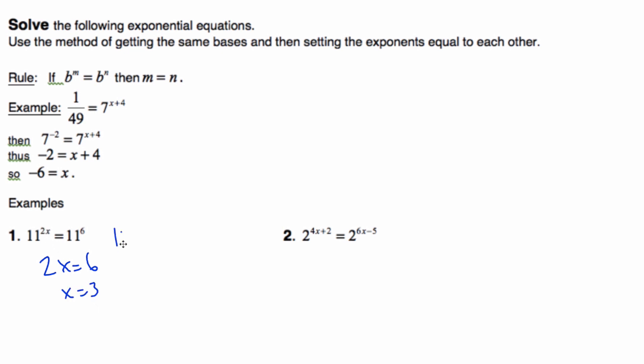And so if I check that, well, that's going to be 11 to the 2 times 3 is equal to 11 to the 6th. Well, that's 11 to the 6th equal to 11 to the 6th, means they have to be equal.